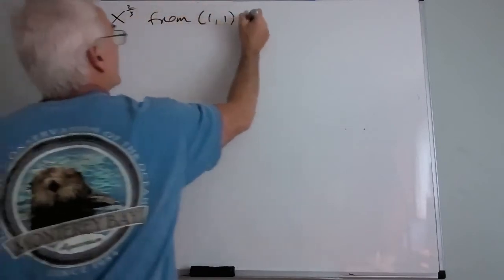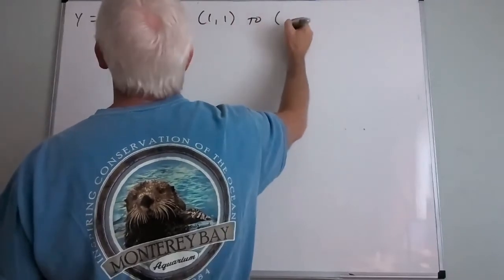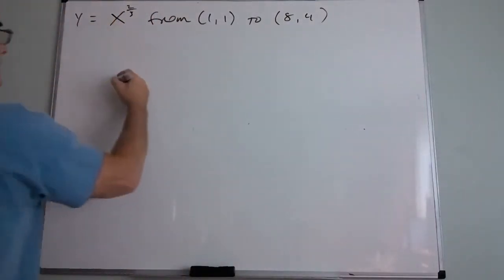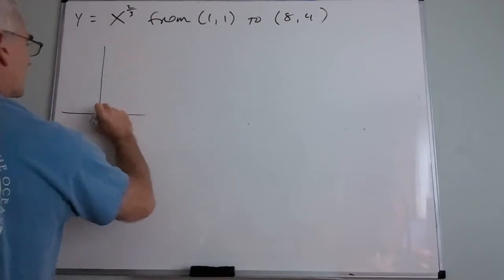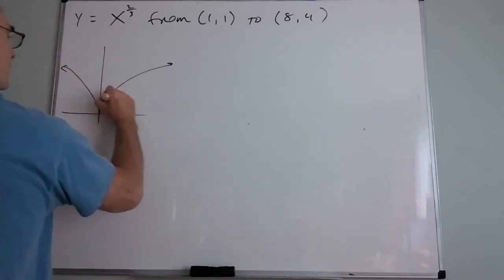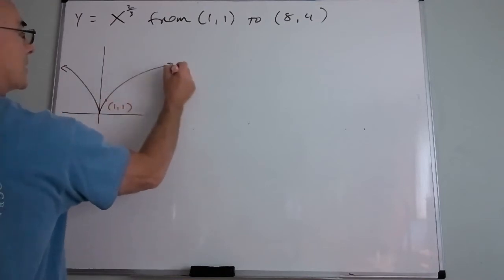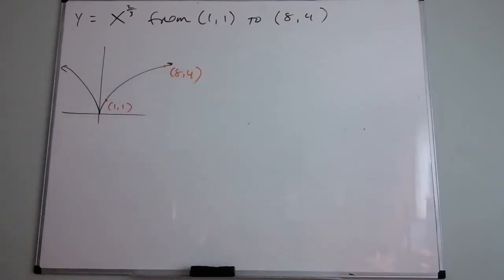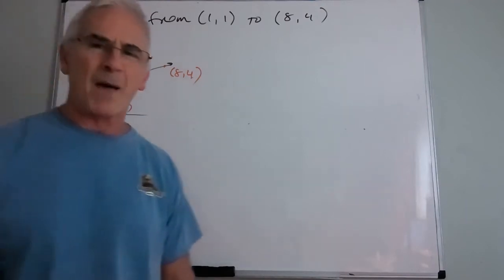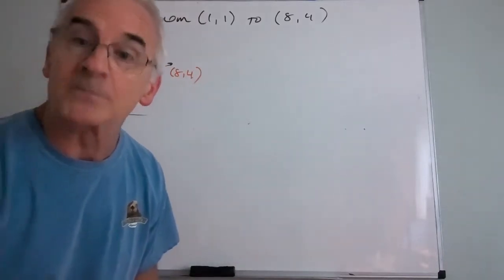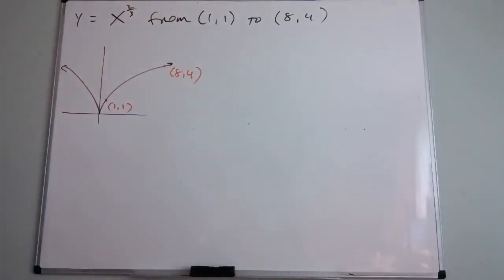The graph of y = x^(2/3) looks like this. I want to go from (1, 1) to (8, 4). This curve is not rapidly moving, so the length of the line segment joining these points and the length of the curve probably aren't too far apart — and I'll use that as a quick check of my final answer.